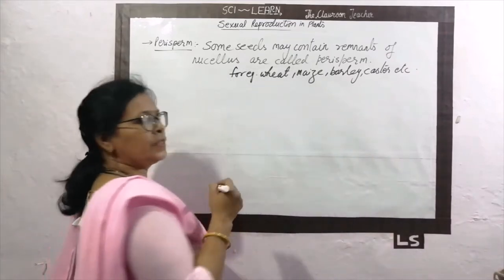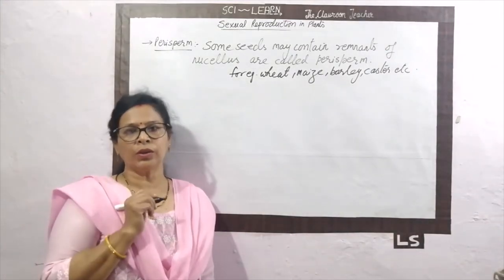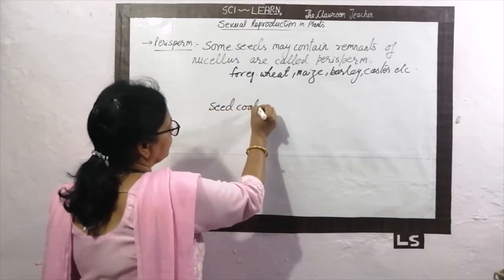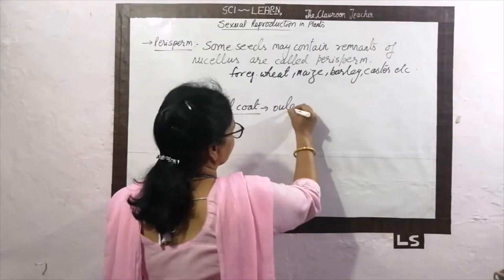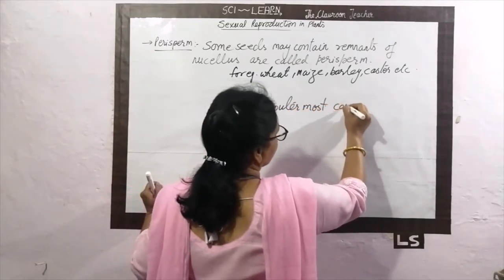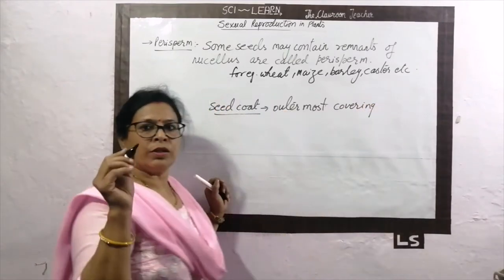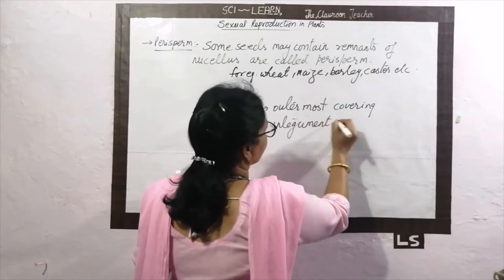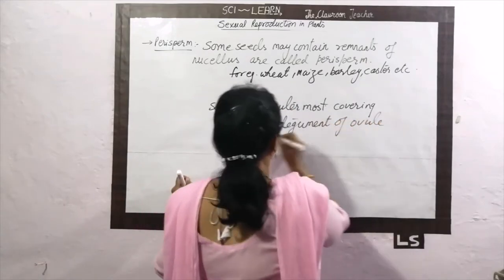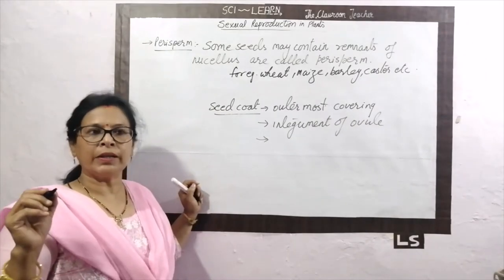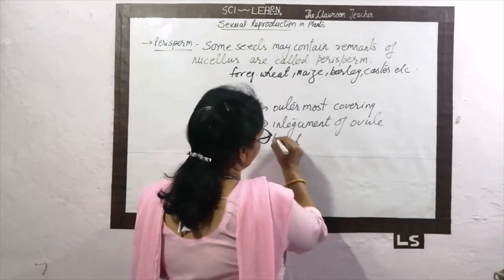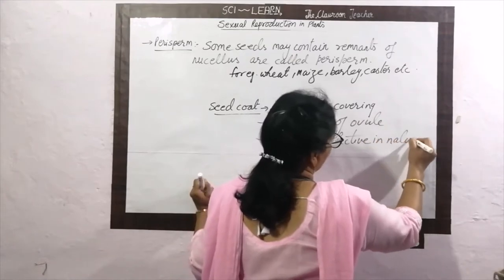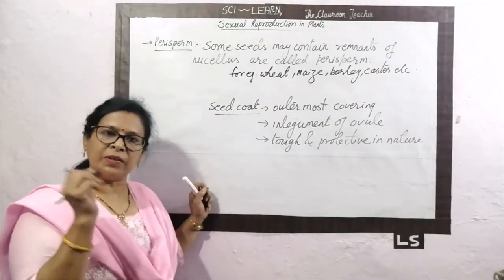Now, the seed coat. The seed coat is the outermost covering of the seed. It develops from the integuments of the ovule. Why is it present? Because it is tough and protective in nature — it is present to protect the embryonic axis which is present inside the seed.